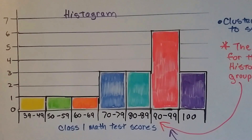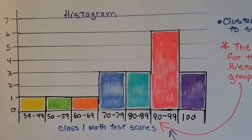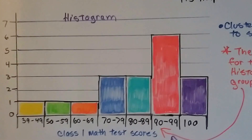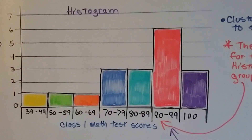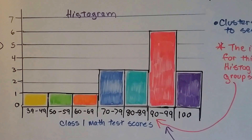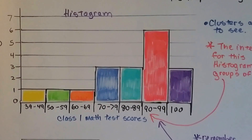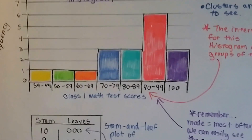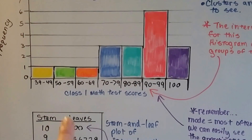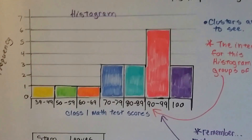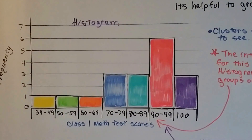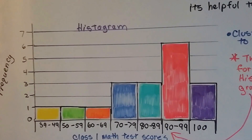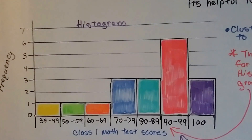We have been doing Class 1 math test scores for the last few videos. We did mean, median, and mode with those scores, and we did stem and leaf plots with the same scores. Now here's a histogram with the same scores. There were 18 students, and these were their test scores.